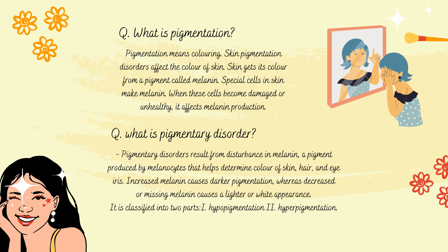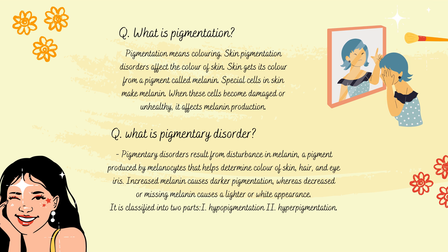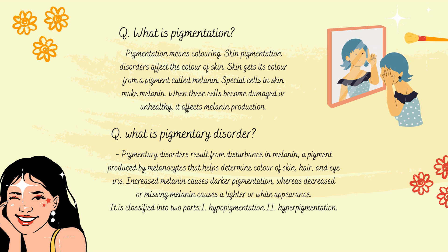What is pigmentation? Pigmentation means coloring of the skin. Pigmentation disorders affect the color of the skin. Skin gets its color from a pigment called melanin. Special cells in the skin make melanin. When these cells become damaged or unhealthy, it affects melanin production.